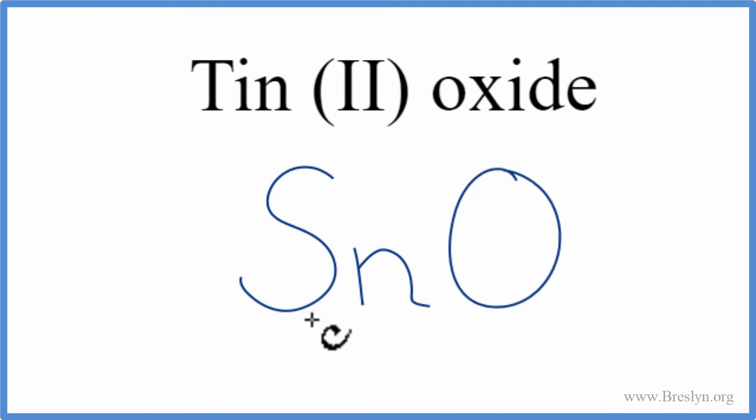Tin is a transition metal and oxygen is a non-metal. A metal and a non-metal form an ionic compound, so we need to think about the charges on the tin and the oxygen.